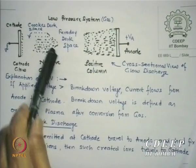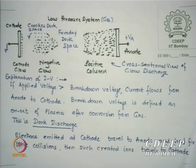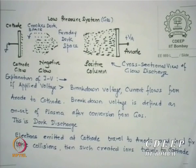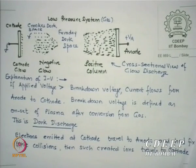Crookes dark space exists because electrons are traversing the mean free path distance. In this region there are no collisions because the mean free path hasn't been exceeded. Once electrons reach the end of the mean free path, they encounter gas and ions, and having acquired sufficient energy, plasma can be created. The Crookes dark space is essentially the mean free path distance from the cathode where no collisions are possible.